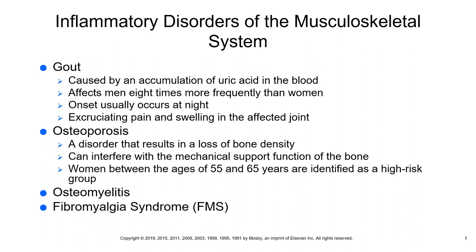Diagnostic tests for osteoporosis include CBCs, calcium and phosphorus levels, and alkaline phosphatase to diagnose bone disease. Radiographic studies with x-rays and bone mineral density tests are performed to see how tightly the bone is packed, usually measuring the hip and spine.